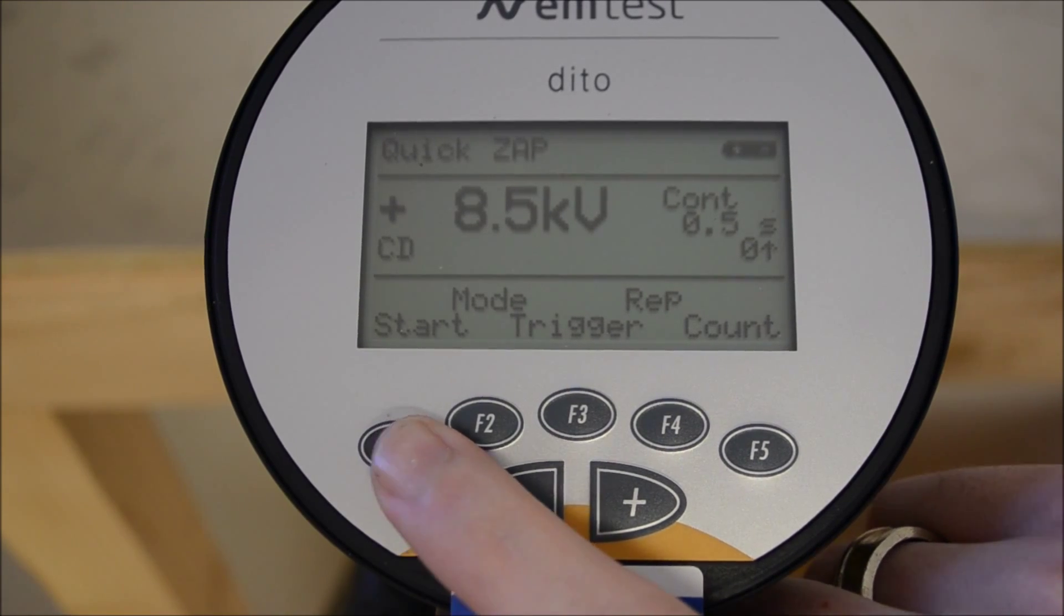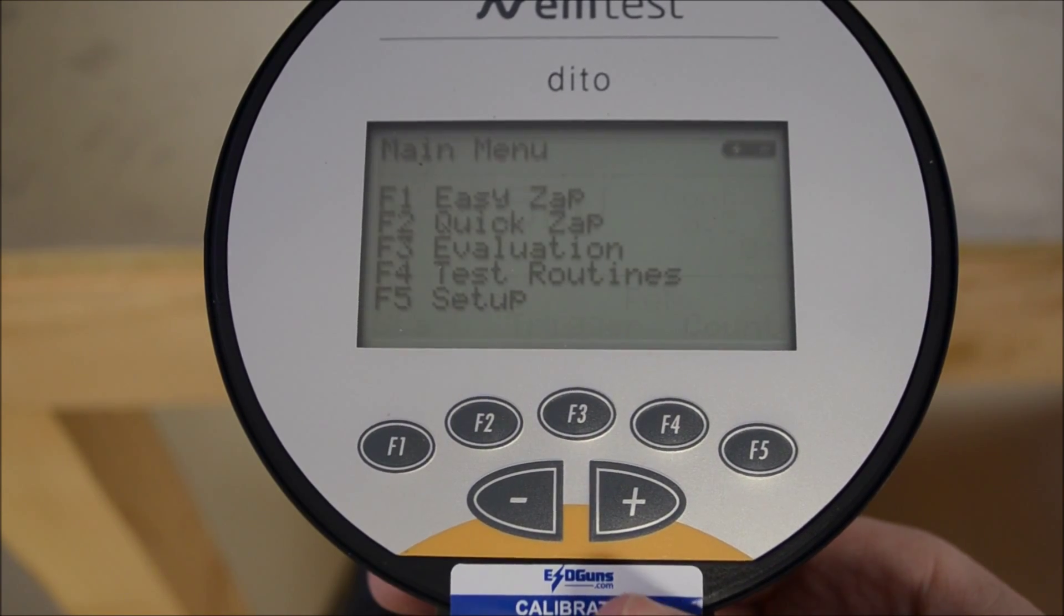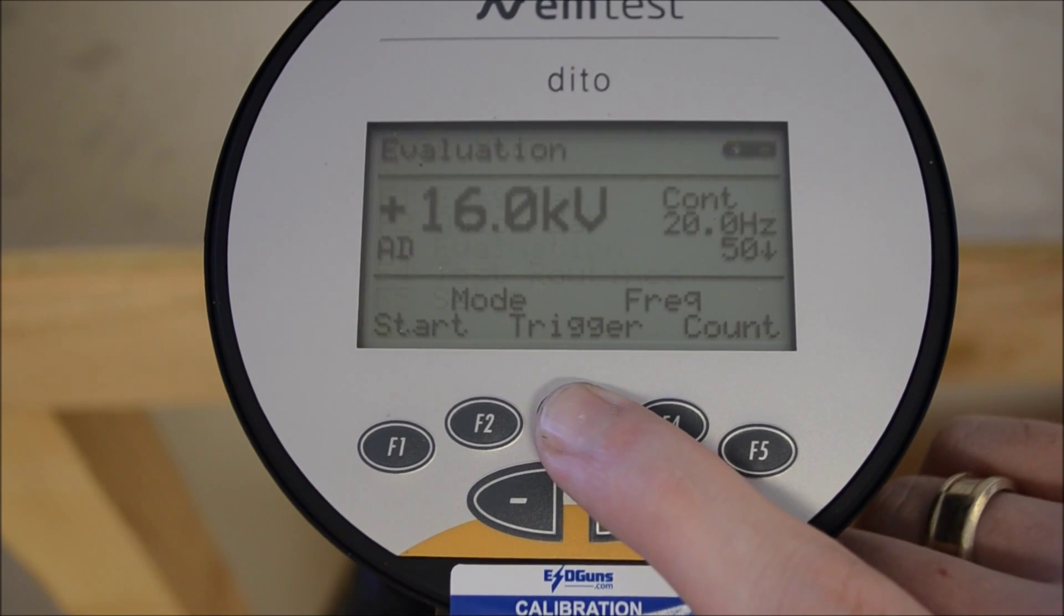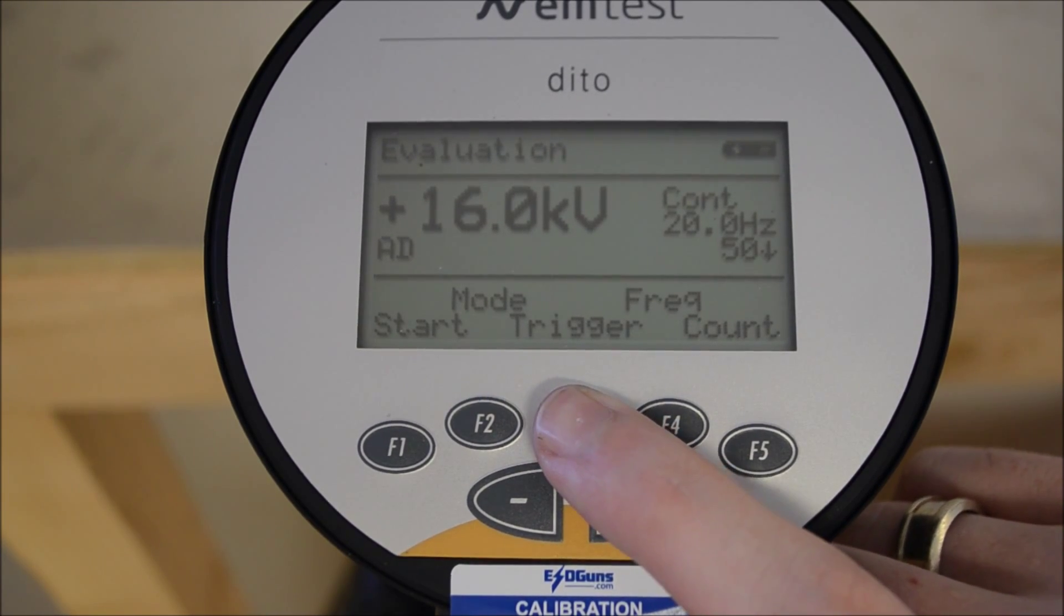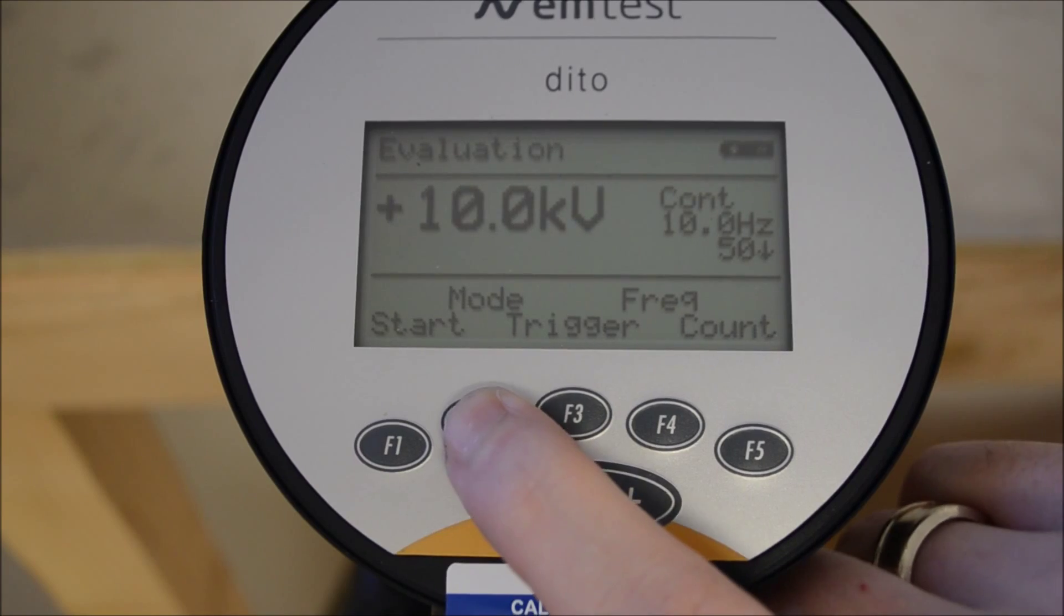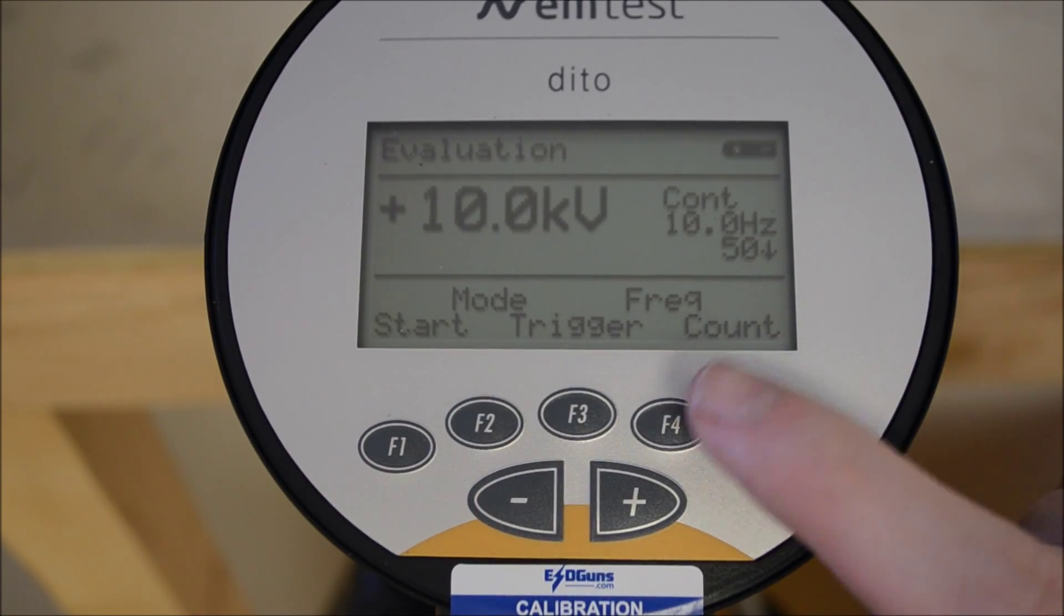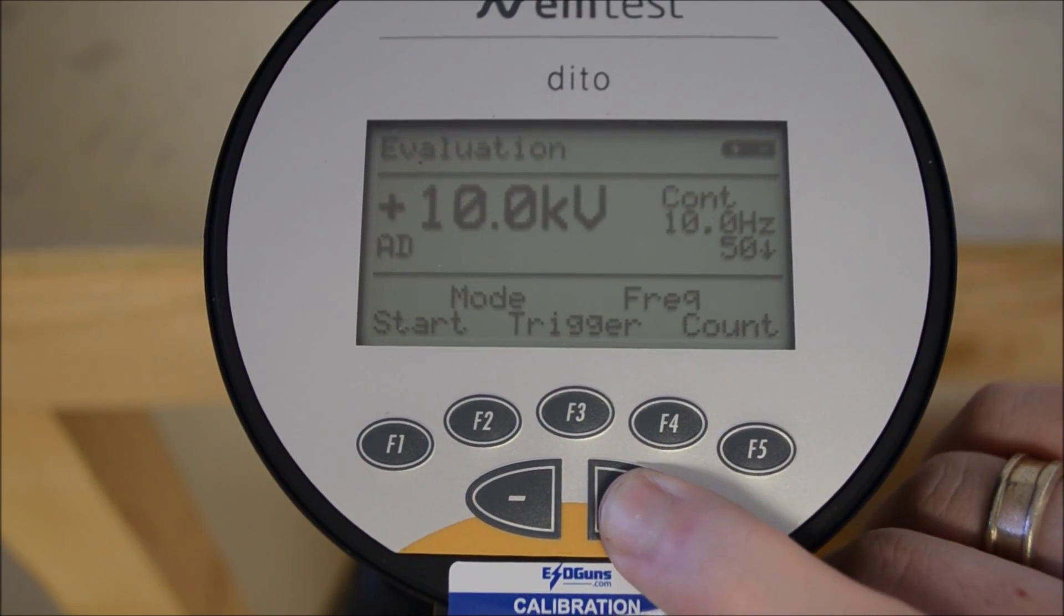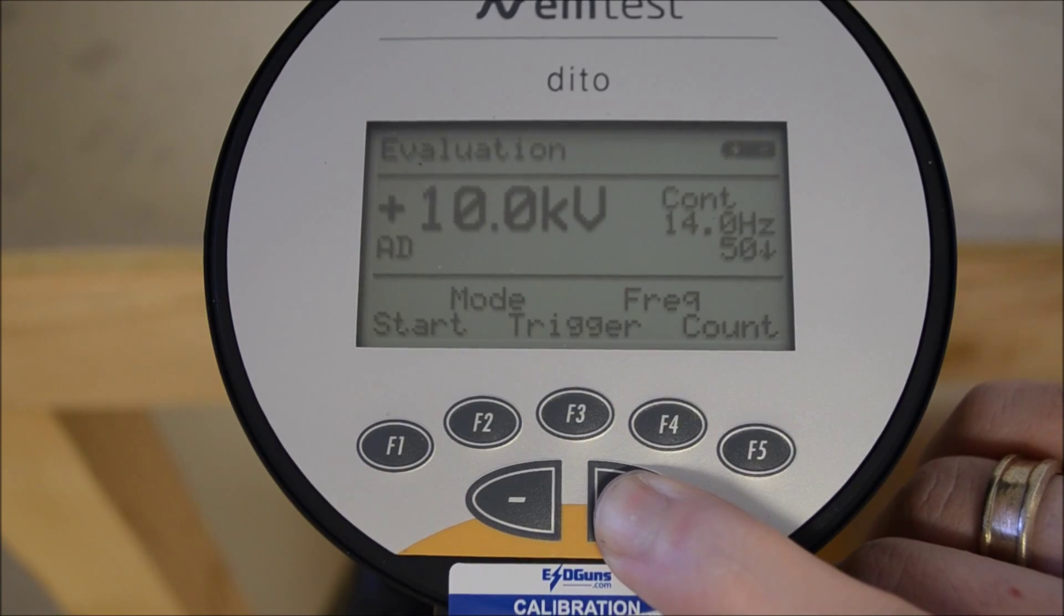Allowing us to use the trigger to back out to the main menu and move into evaluation mode. Evaluation mode can be used to check the DUT for sensitive test points. The preferred method to find these points are in air discharge mode. In this section we can speed up the discharge frequency to 20 Hz.